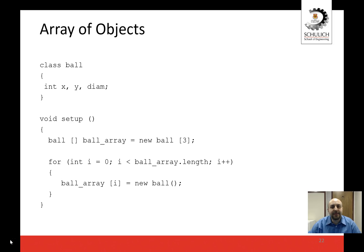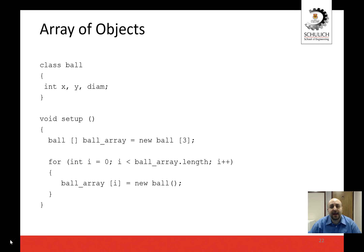We have pretty much covered everything we planned to cover about objects. There are a lot of other topics related to classes and objects, but we're not going to go any further. The rest of the material isn't really new — it's about learning how to use old constructs we've already talked about, such as arrays and functions, with objects. It turns out there's basically nothing new. Everything works just as it was. So let's talk about arrays of objects first.